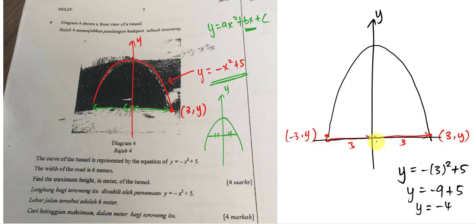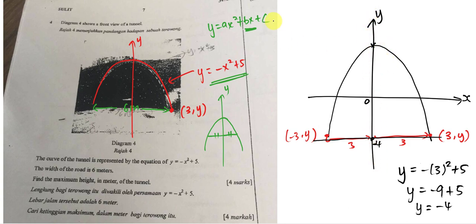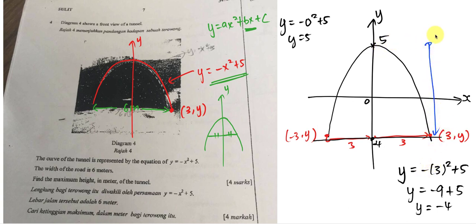From the coordinate, we know the y value at the road edge is negative 4, meaning the x-axis sits at y = -4. The maximum height is at x = 0 on the y-axis — substitute 0 into the equation and you get y equals 5. The maximum height is then measured from the top (y = 5) down to the road level (y = -4).